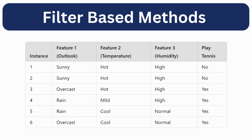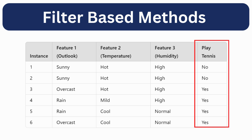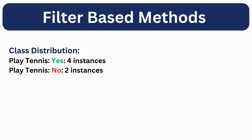The fourth feature is the label. Based on outlook, temperature, and humidity, we need to predict whether we should play tennis or not. If we observe the play tennis feature, we can see that there are two instances that are 'no' and four instances with the value 'yes'. So the class distribution is four yes and two no.